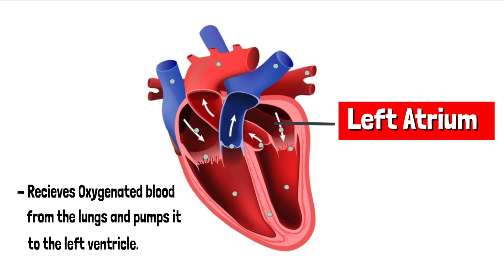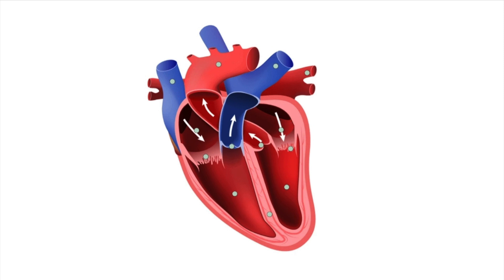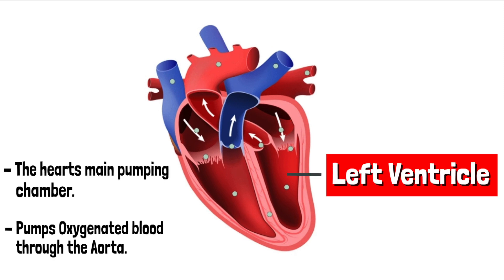The left atrium — it receives oxygenated blood from the lungs, then pumps it to the left ventricle. The left ventricle is the heart's main pumping chamber. It pumps oxygenated blood through the aorta, which pumps blood to the rest of the body.